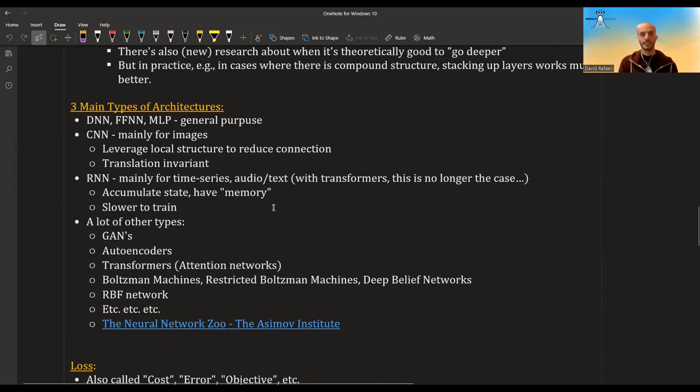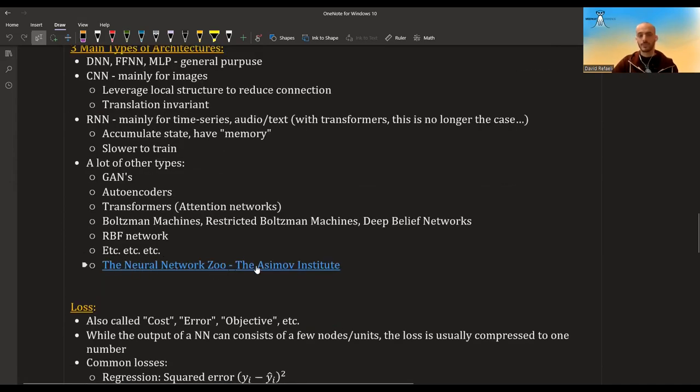There's also what is called recurrent neural networks. They are used mainly for time series or also for audio and text. Actually, with the rise of the transformers, I'm not sure this is still the case. I think the popularity of RNNs is going down. But in a nutshell, what they do, they sort of accumulate state and have this sort of memory where you get new information all the time and you update your state and give better prediction or better classifications given this new information. This constraint where you can't look to the future, you can only look to the past, kind of makes it harder for these neural networks to train. This is one shortcoming and also a reason why transformers, which solve this problem, are gaining more popularity. There's a lot of other types: GANs, autoencoders, transformers, Boltzmann machines, RBF networks. There's this page called the Neural Network Zoo. You can google it. It has a lot of different architecture and explains a bit about them.